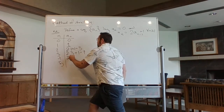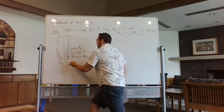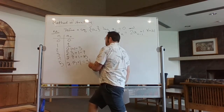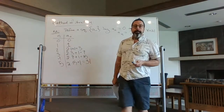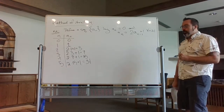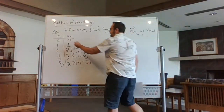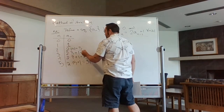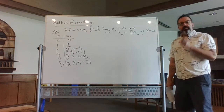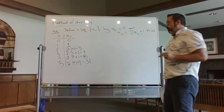Two times seven plus one gives 15. Two times 15 plus one is 31. So we have the sequence zero, one, three, seven, 15, 31. Pause the video for a second and see if you can figure out the pattern before I reveal it.